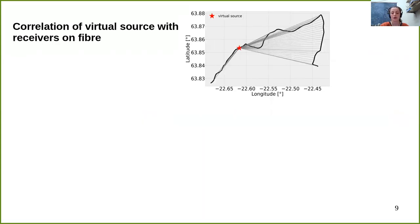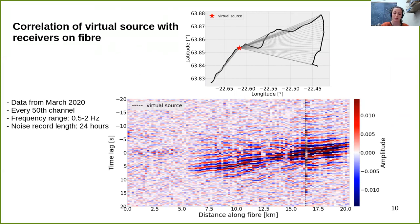An example of a virtual source-receiver configuration is shown here. The red star represents the channel acting as the source, and the gray lines show the ray paths to receivers evenly distributed on the whole fiber. Computing all correlations between this source and every 50th channel gives the shown image, with the x-axis showing fiber distance in kilometers and the y-axis showing lag time in seconds. Twenty-four hours of noise recorded in March 2020 were used, bandpass filtered between 0.5 and 2 Hz. The first six kilometers correspond to the north-south oriented section, where we barely see surface waves, while on the last 15 kilometers we see one-sided surface waves traveling along the east-west section of the fiber.